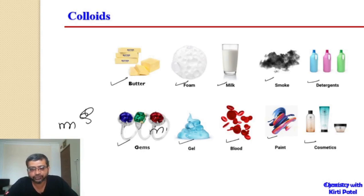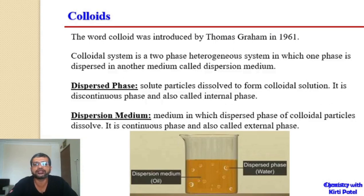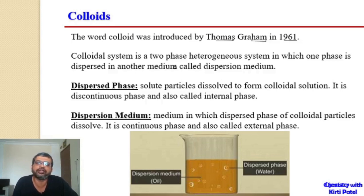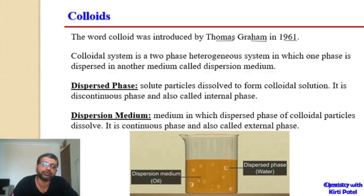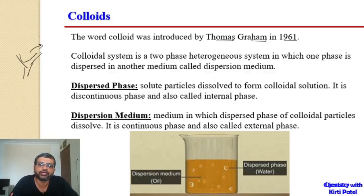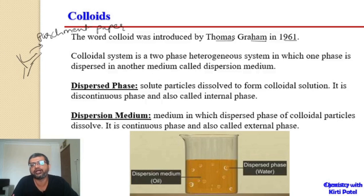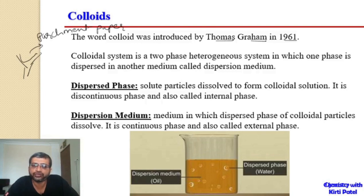The word 'colloid' was introduced by Thomas Graham in the year 1861 when he was studying different solutions. He tried to filter solutions through parchment papers or animal membranes and found that certain solutions could not be filtered easily while others could. He therefore described them as two types: colloidal solutions and crystalloid solutions.